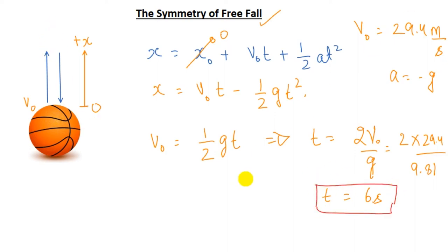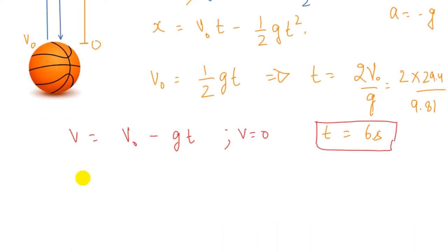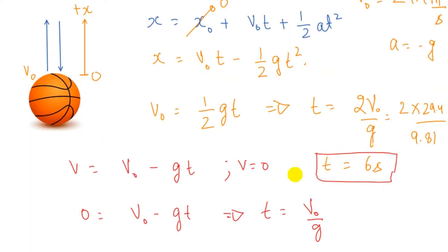To find the time at which velocity becomes zero, we use v = v-naught − g·t, set v = 0, and get t = v-naught/g = 29.4 / 9.81 = 3 seconds. This is exactly half the total round-trip time. At this instant, the velocity of the ball is zero — this corresponds to the topmost point.